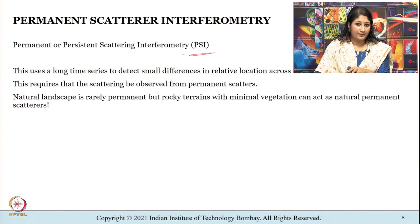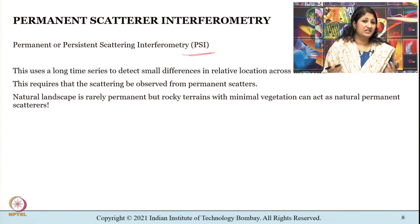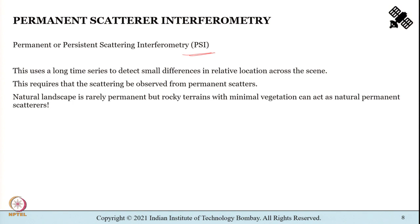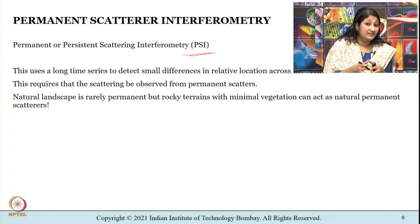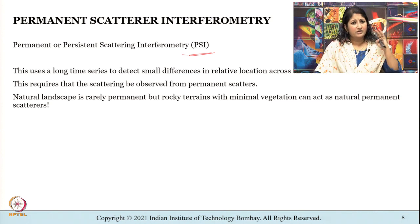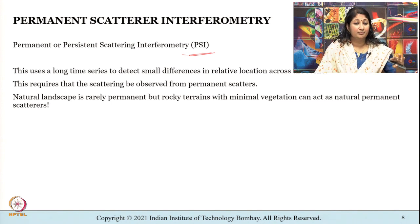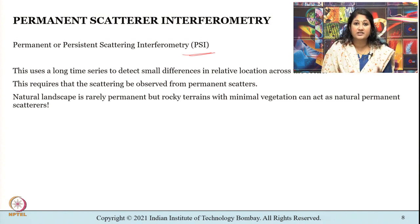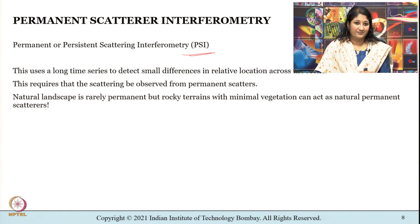In an urban area like Mumbai there can be many permanent scatterers; corner reflectors can also be used. In natural landscapes permanent scatterers are rare, but rocky terrains with minimal vegetation can act as natural permanent scatterers. PSI is a relatively new area of research and I would urge you to look it up if you are interested.